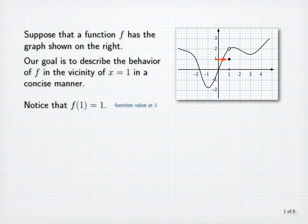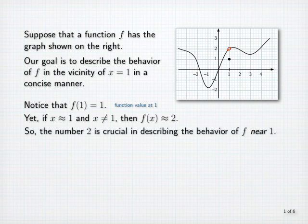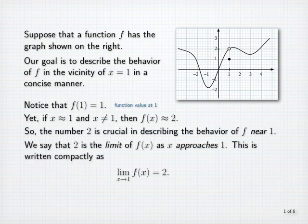Yet if x is close but not equal to 1, then f of x is close to 2. In fact, the closer x is to 1, the closer f of x is to 2. So the number 2 is crucial in describing the behavior of f near 1. The way that we describe this behavior is to say that 2 is the limit of f of x as x approaches 1. This is written compactly in the manner shown.